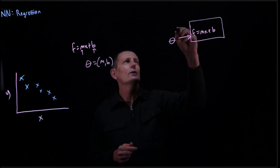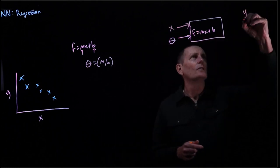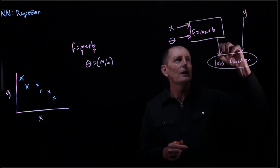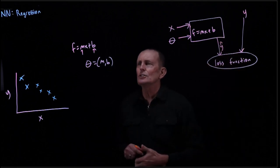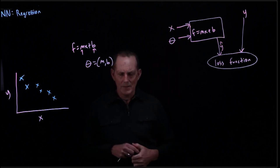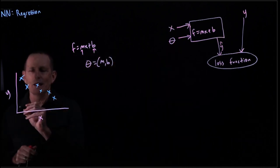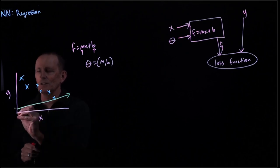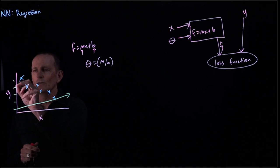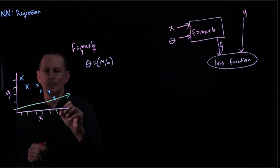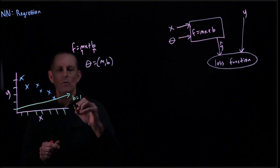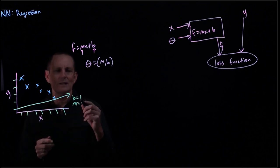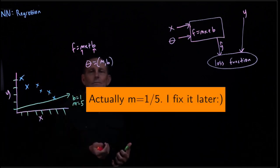We have our mx + b coming in, along with an x input. Then y goes into a loss function, and coming out of f is y_hat. To begin with, we have a random theta. Let's say b equals 1 and m is about 1/5 — rise over run — these are just numbers we picked randomly.